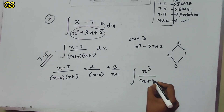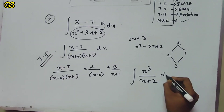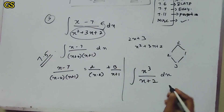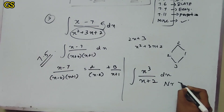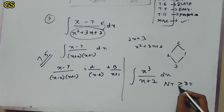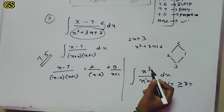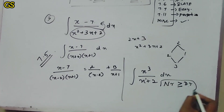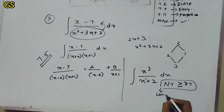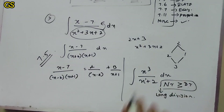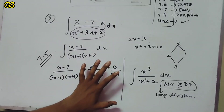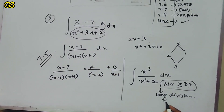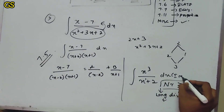Integration of (x minus 7) over (x+2)(x+1) dx — using partial fraction: (x minus 7) over (x+2)(x+1) equals A over (x+2) plus B over (x+1). So partial fractions solve exercise number 7.5. If we factorize the fraction, we can use it. If the numerator degree is higher, we use x cubed over (x+2) — that requires long division.